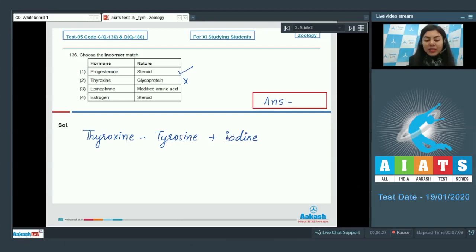So it's an amino acid derivative and not a glycoprotein, so this is an incorrect match. Option number three, epinephrine modified amino acid, that is correct. And estrogen is a steroid, that is also correct. The right answer here is option number two.